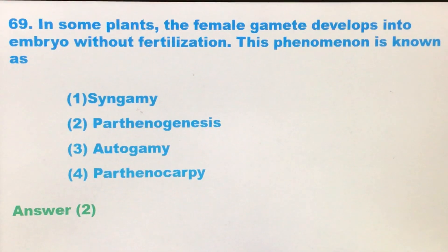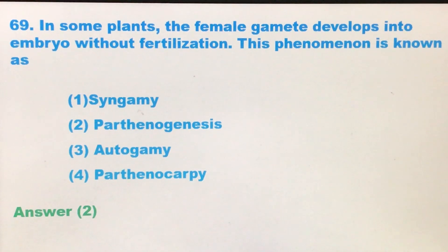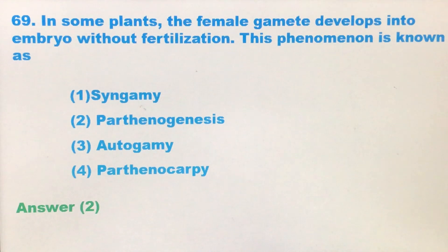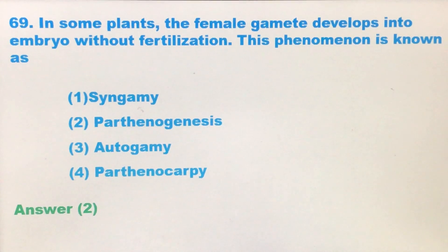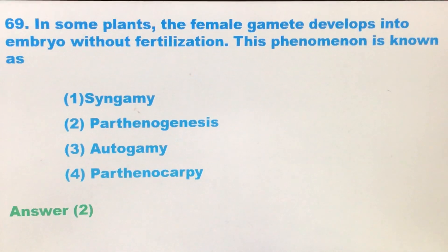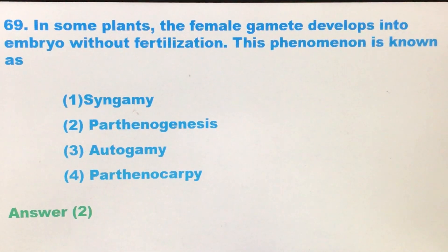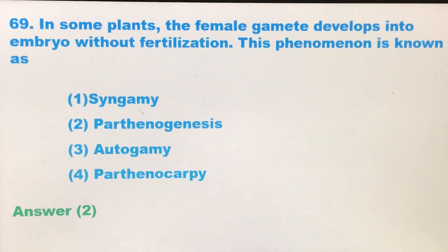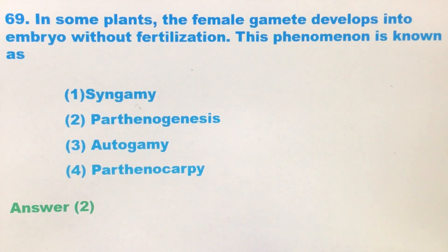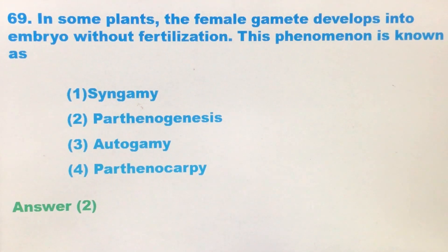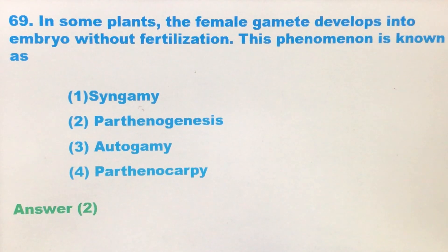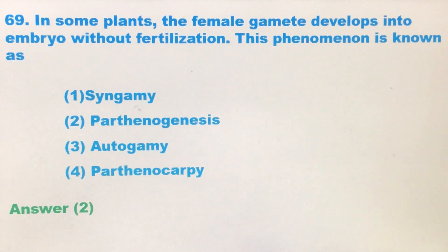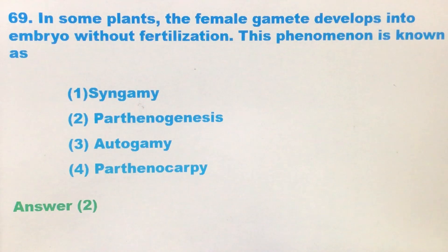Question number 69. In some plants, the female gamete develops into embryo without fertilization. This phenomenon is known as what? The first option is syngamy, the second option is parthenogenesis, the third option is autogamy, and the fourth option is parthenocarpy.